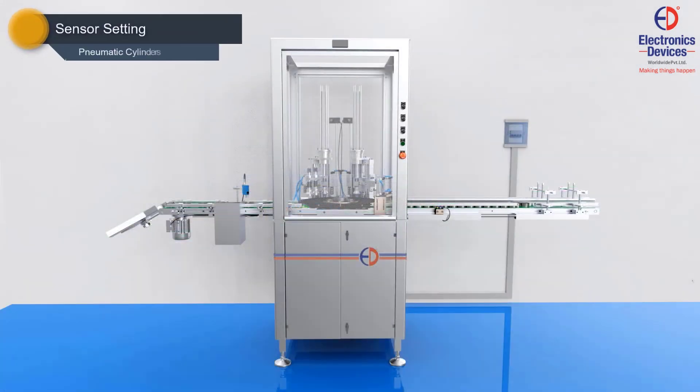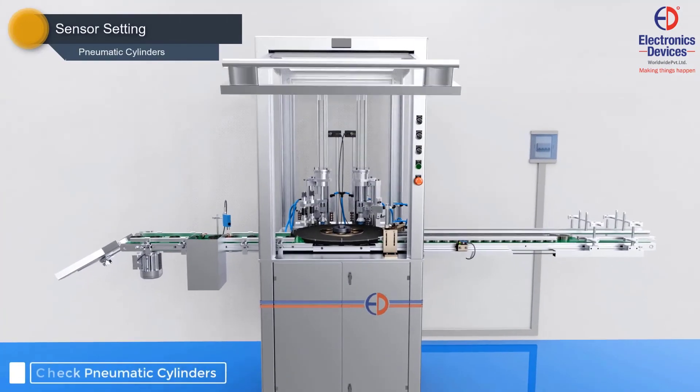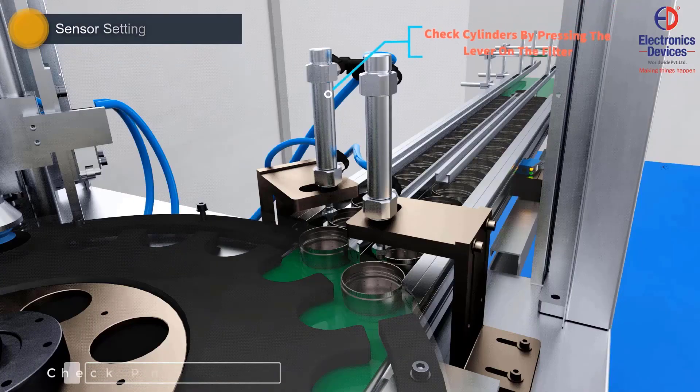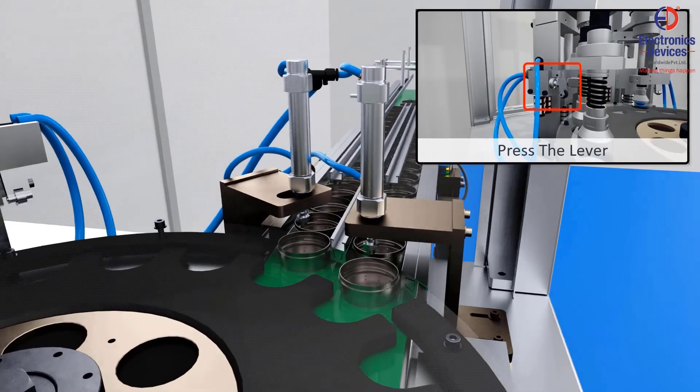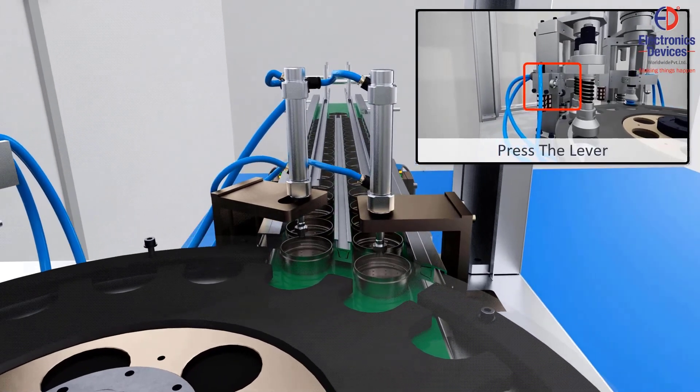Once the infeed sensor is set, check the main waiting area, which consists of pneumatic cylinders. Press the lever manually to check cylinder operation.